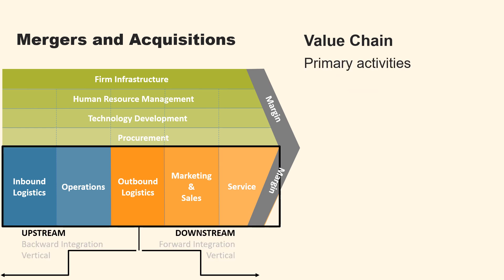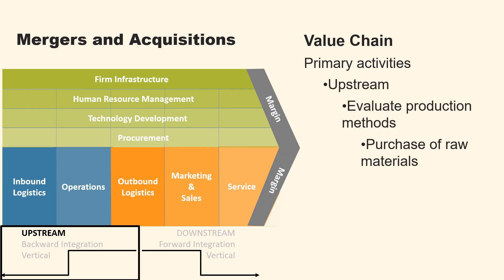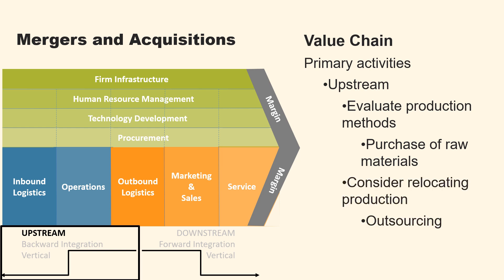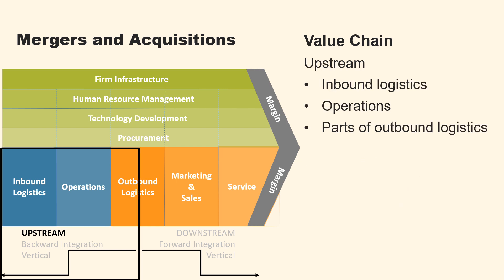The value chain's primary activities can be divided into upstream and downstream processes. A company can evaluate the most efficient production methods through upstream processes and determine the necessary raw materials to purchase. It may also consider relocating production to a different country, a practice commonly called outsourcing. Upstream activities consist of three value activities: inbound logistics, operations, and parts of outbound logistics.